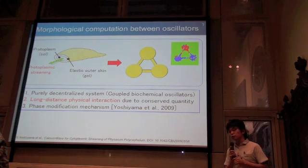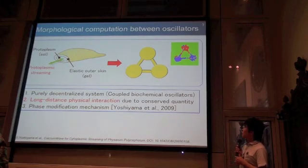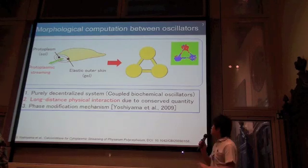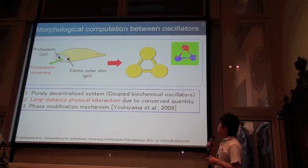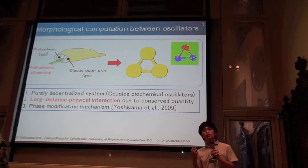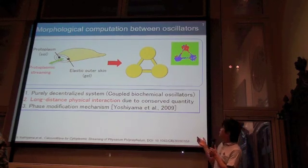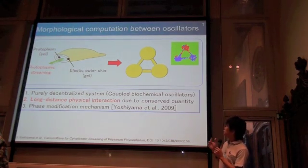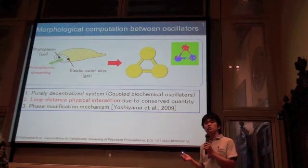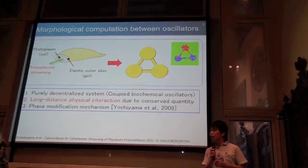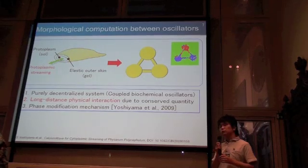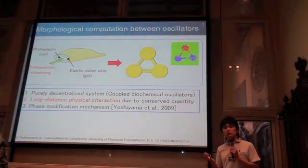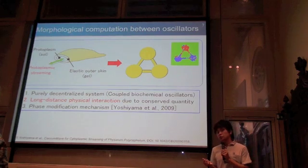In order to build such robots, let's look at the details of slime mold. Slime mold consists of an elastic outer skin and a protoplasm. The elastic outer skin is made from a gel structure, and this part generates oscillation to push the protoplasm. The protoplasm is made from a soft structure, pushed by the elastic outer skin, and the protoplasm is extremely redistributed. One important factor that allows the system to generate versatile behavior is physical communication between oscillators — or morphological computation between the oscillators.